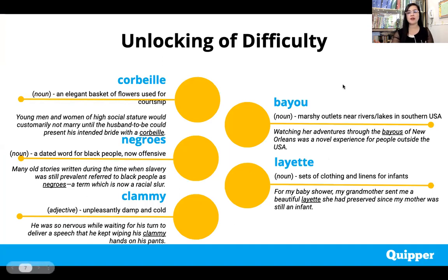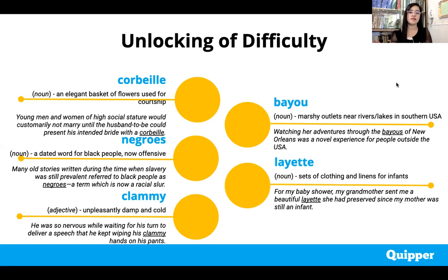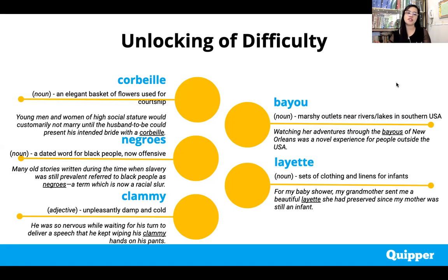For our literary text reading, we will unlock five vocabulary words to enrich our vocabulary. First, 'forveal' — an elegant basket of flowers used for courtship. For example, young men and women of high social stature would customarily not marry until the husband-to-be could present his intended bride with her forveal, a basket in which flowers are placed and offered to the bride-to-be.